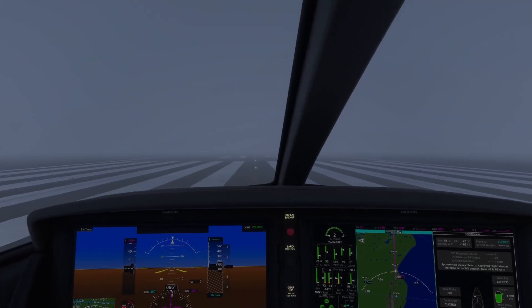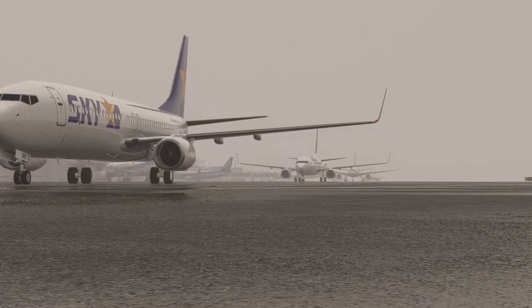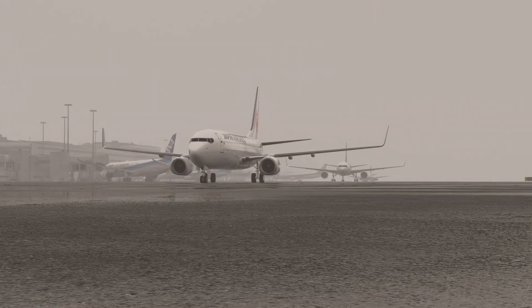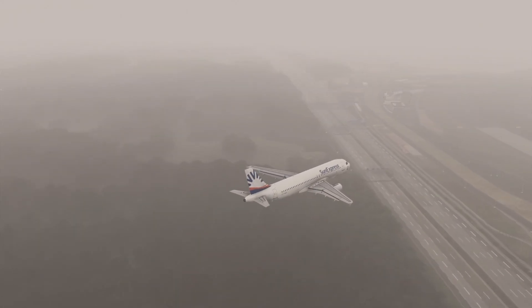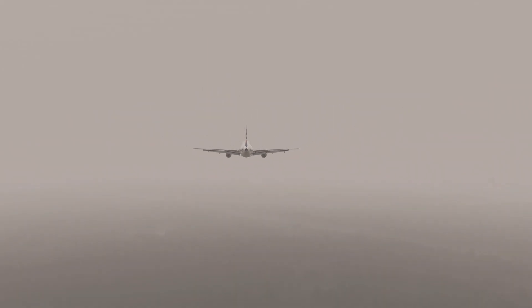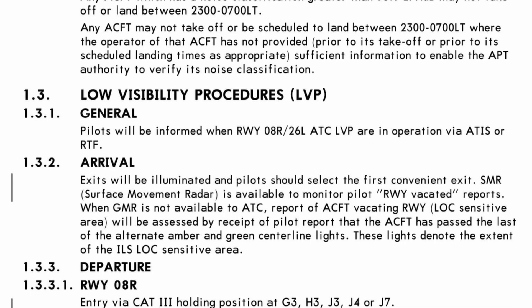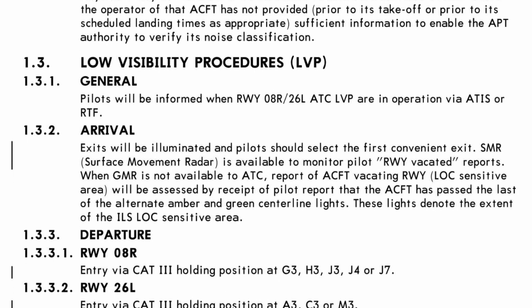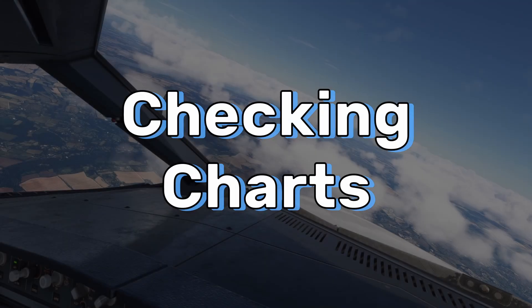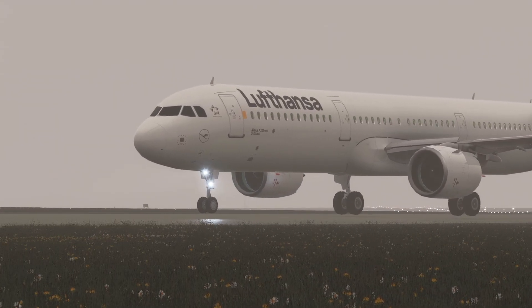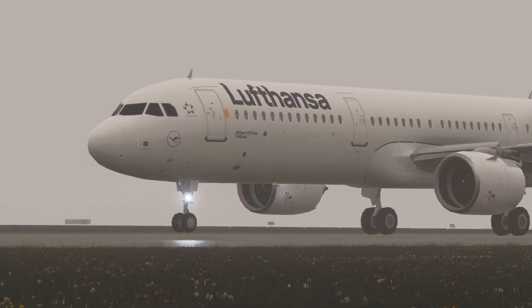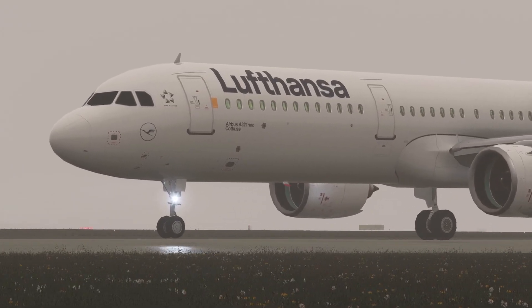Low visibility operations in force means that special rules are being followed due to low visibility. When that happens, the rules for taxiing, take-off and landing will change. For example, aircraft may have to stop at earlier holding points, further from the runway, to not interfere with autolands and the ILS signals. The separation between aircraft is also increased on the ground and on approach to reduce the risk of collisions.